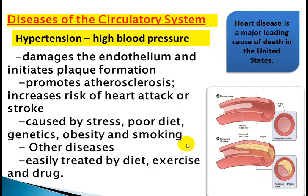What happens in hypertension? If the lumen — this is the normal lumen — if the lumen is narrowed, this causes high blood pressure, as shown in this figure.